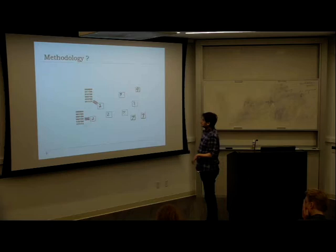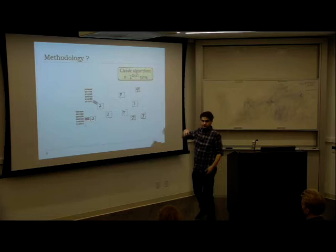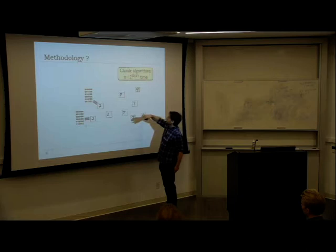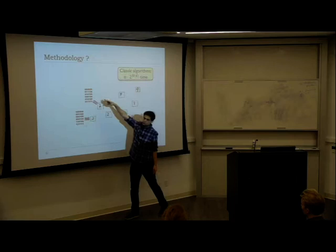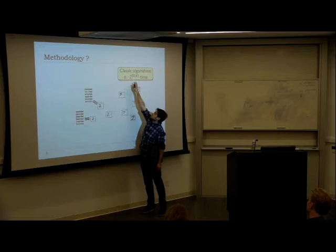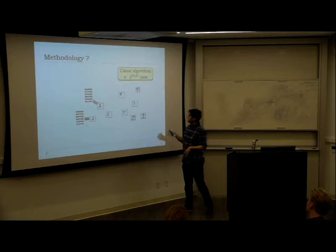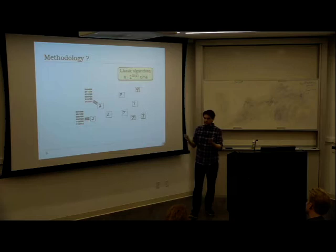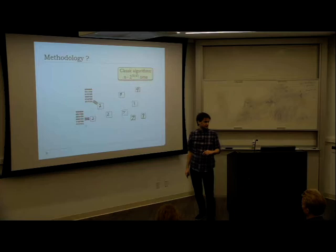Classical algorithms for similarity search either take n-squared time, or if you want faster algorithms, they only work in small dimensions. For example, runtime like n times 2^(omega*d). The classical textbook algorithms degrade exponentially with dimension, so with 400-dimensional vectors, 2^400 is just not feasible.